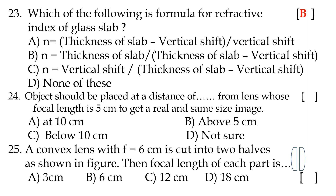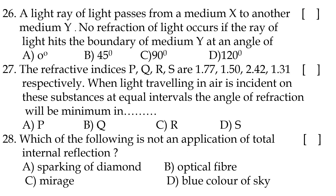Twenty-fourth question: the object should be placed at a distance of 10 centimeters from a lens whose focal length is 5 centimeters to get a real image of the same size. Twenty-fifth question: a convex lens with f = 6 centimeters is cut into 2 halves as shown in the figure; then the focal length of each part is 12 centimeters.